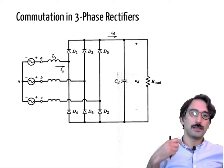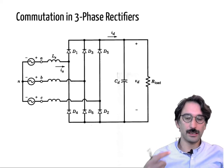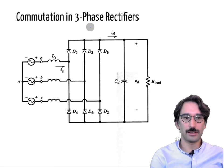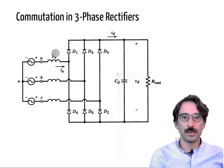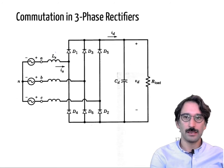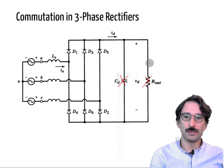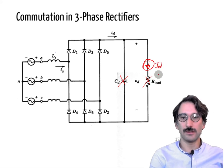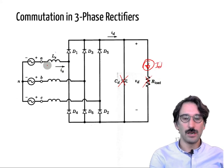Now let's look at the effect of grid inductance on three-phase rectifiers. We have those inductances — they are just parasitic inductances, not ones we specifically add, but they exist due to cable length and so on. For simplicity, we are ignoring those details and assuming we are supplying a DC current source, and now we have those inductors.